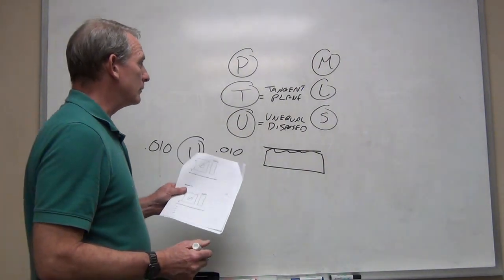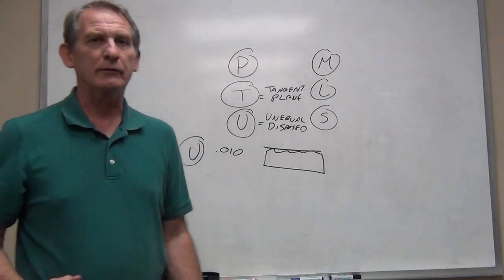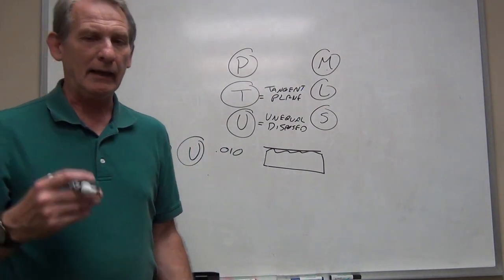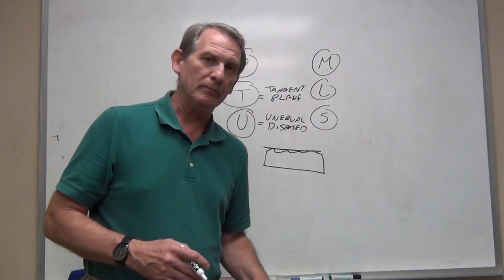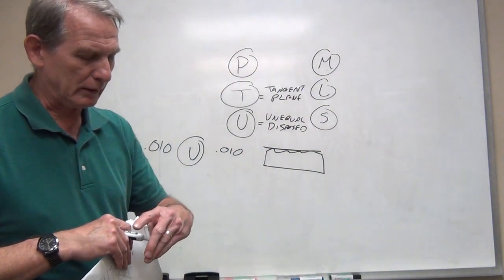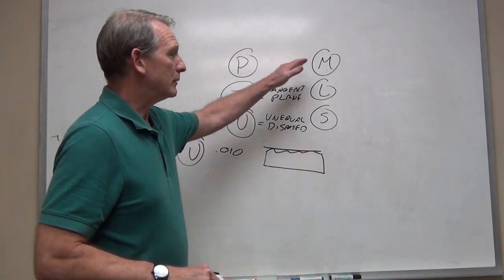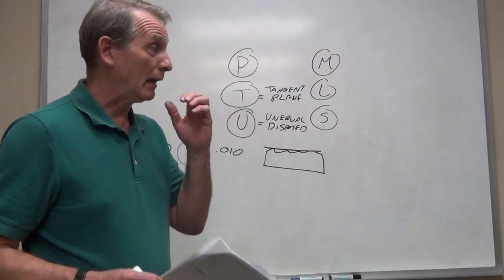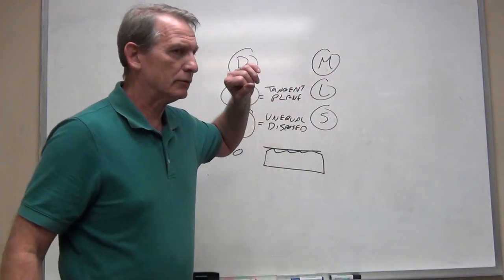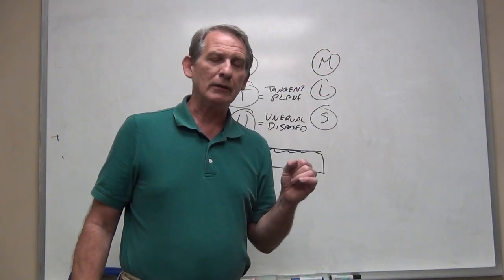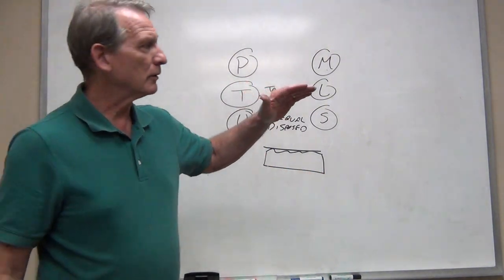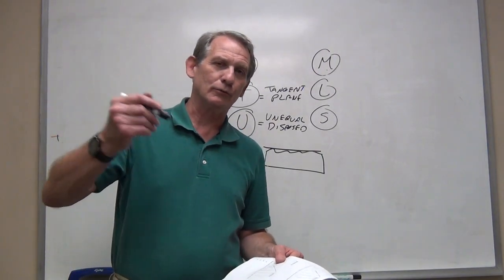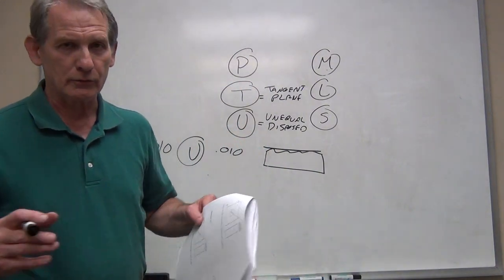Material condition modifiers are intended to adjust the size of the tolerance zone depending on the material condition of the feature — and sometimes the datum, though the test won't have questions requiring you to evaluate a material condition modifier on a datum. Just remember that the stated tolerance zone size is at its smallest when the feature is at maximum material condition. As the feature moves away from MMC toward least material condition, the tolerance zone only gets bigger.